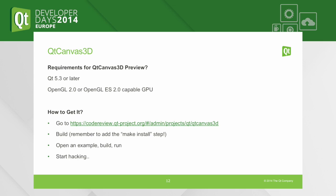What are the requirements? At the moment, Qt Canvas 3D requires Qt 5.3 or later, and of course you need to have an OpenGL API available — usually a graphics card and driver, so you need OpenGL ES2 or OpenGL 2. To get it, it's available in the code review in the Qt project pages. When you build it, remember to add the make install step in Creator so it gets installed. Then just open one of the included examples, build, run, and start hacking. It should really be that simple.